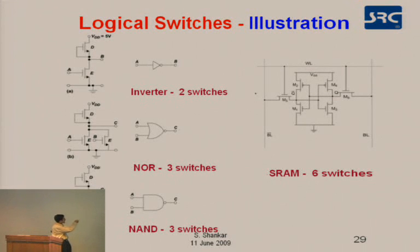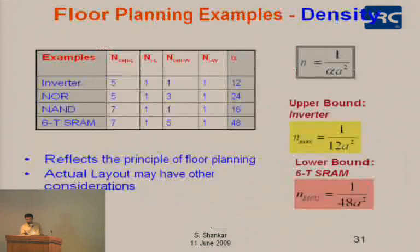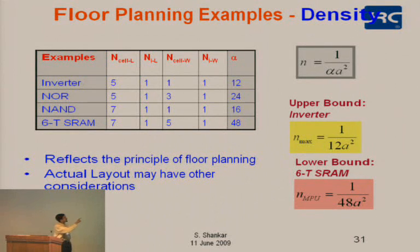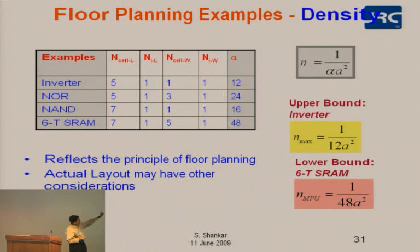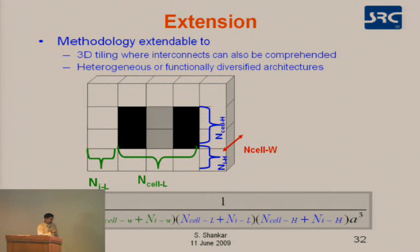Looking at realistic switches — an inverter, NOR, NAND, and SRAM: the inverter layout efficiency is 1 over 12 A squared; NOR is 1 over 24 A squared; NAND is 1 over 16 A squared; and the 6T SRAM is 1 over 48 A squared. The ideal minimum is 1 over 8 A squared, and ITRS says 1 over 20 A squared. The SRAM is the least efficient in terms of stacking efficiency, and the inverter is the most efficient. This formula can also be extended into 3D tiling to look at the geometry of 3D architectures.